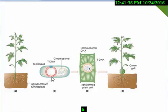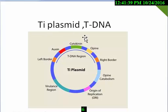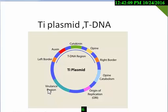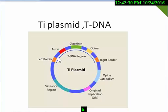Now we will learn the details about the Ti plasmid and T-DNA. Here is the Ti plasmid and the T-DNA region. T-DNA is transferred from one organism to another. Within the T-DNA, a few components are found, including the virulence region. This virulence region contains the genes required for the T-DNA transfer process. To transfer T-DNA to a new organism, we need these required genes found in the virulence region.